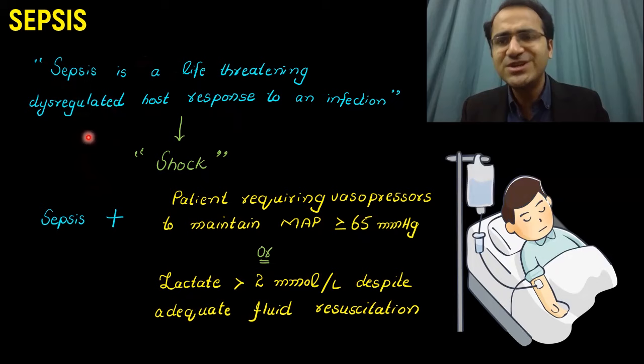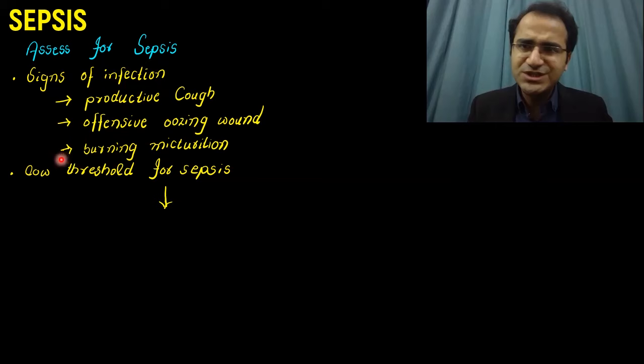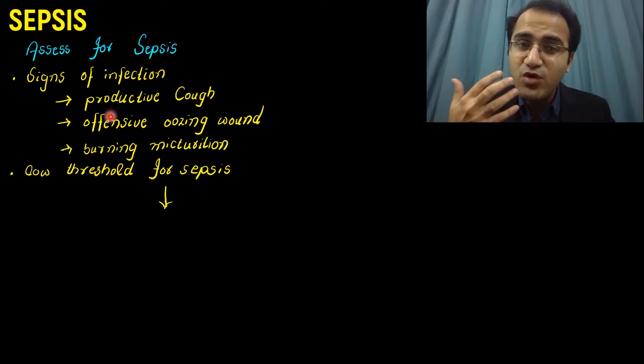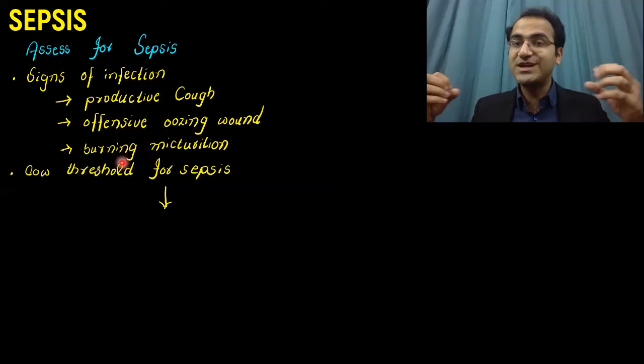In summary, sepsis is a dysregulated host response to an infection, while in shock the patient is unable to maintain blood pressure in the presence of sepsis. Whenever a patient presents and you think they are in sepsis, the first thing to look for is signs of infection — the source of infection. Look for productive cough, offensive oozing wounds, or burning micturition. If any of these signs are present, there is a source of infection that can lead to a dysregulated response and sepsis.